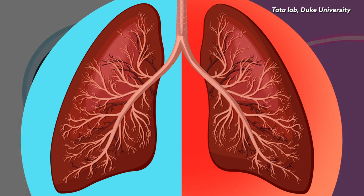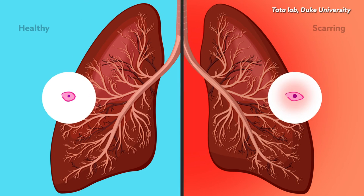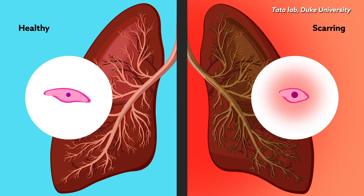Cells normally pass through the transition within days, but under certain conditions, stem cells can become locked in the transition state, leading to lung scarring.